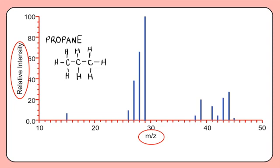The charge of the ions is mostly 1+, so the x-axis can be thought of as giving the relative mass. The largest peak in the spectrum is assigned a value of 100% relative intensity.